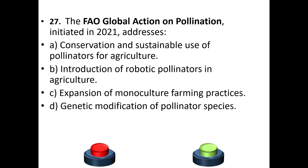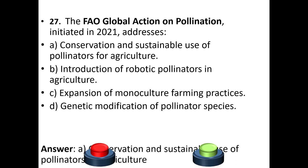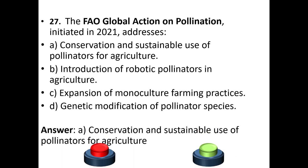Question 27: The FAO Global Action on Pollination, initiated in 2021, addresses: a) conservation and sustainable use of pollinators for agriculture, b) introduction of robotic pollinators in agriculture, c) expansion of monoculture farming practices, or d) genetic modification of pollinator species. The answer is option A — conservation and sustainable use of pollinators for agriculture.